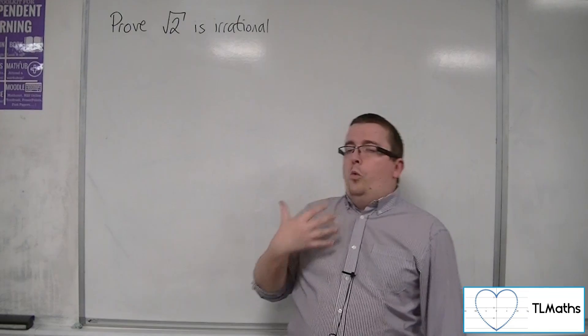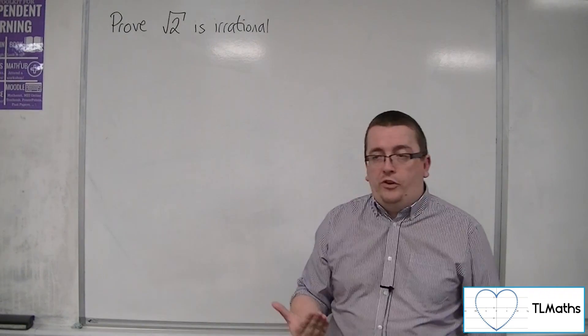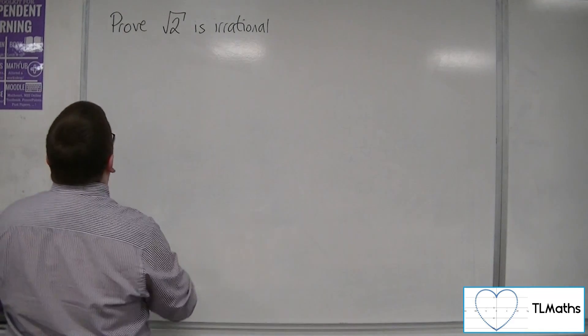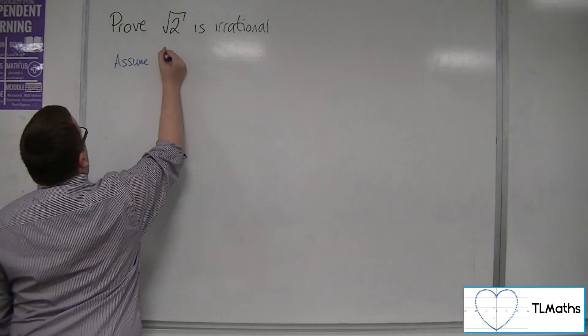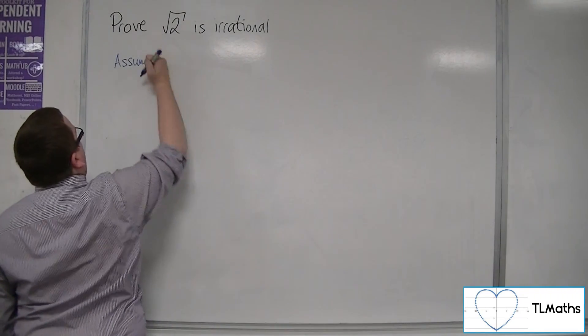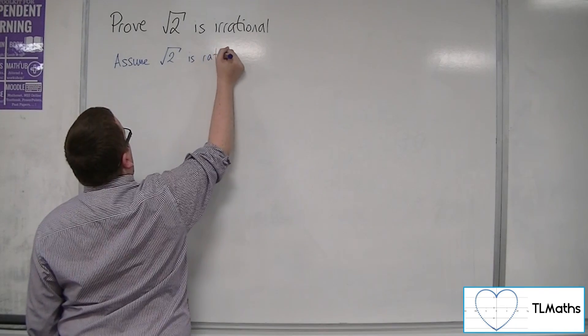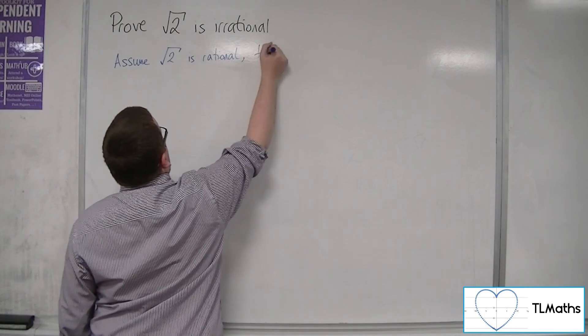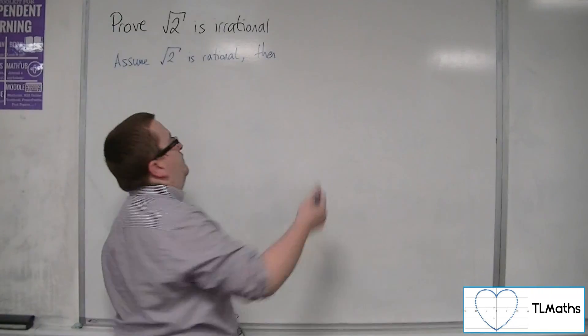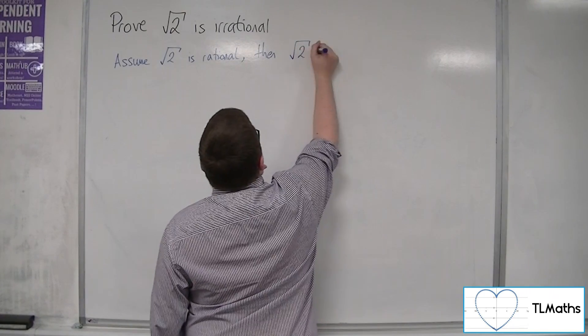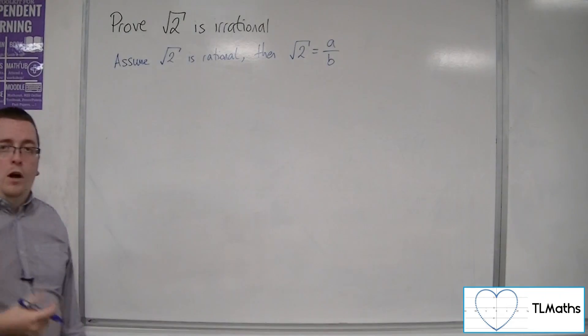So the way that we start this proof is we assume that root 2 is rational. So if we assume root 2 is rational, then I could write root 2 as a fraction a over b, where a and b are whole numbers.